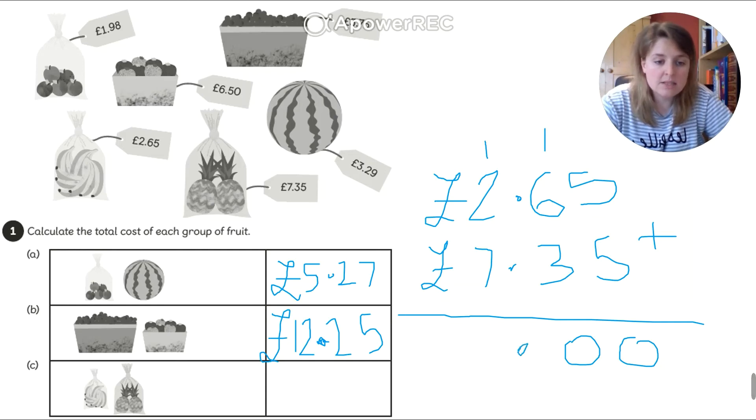Dot, dot. So dot in my answer. 1 add 2 is 3. 3 add 7 is 10 again. So 0 goes here. 1 carries over. There's nothing there to add to my 1. So my 1 just drops down. And then I can put my pound sign.